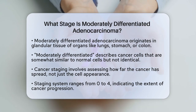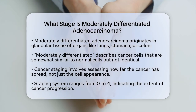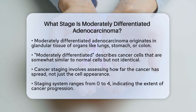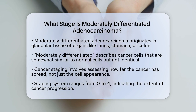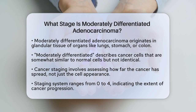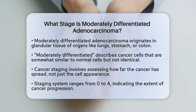First, it's important to understand that adenocarcinoma is a type of cancer that originates in the glandular tissue of various organs, such as the lungs, stomach, or colon. The term moderately differentiated refers to the appearance of the cancer cells under a microscope. These cells are neither very similar to normal cells nor very different — they fall somewhere in between.